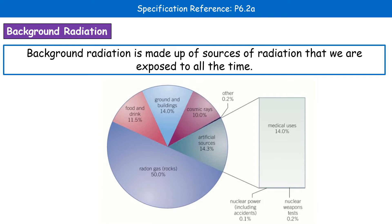We then come down to our artificial sources. A lot of these will be through medical uses, and you can see tiny, tiny amounts in terms of nuclear weapons tests and nuclear power. We then have ground and buildings, food and drink, cosmic rays, and a tiny fraction of other sources that don't fit into the main categories.